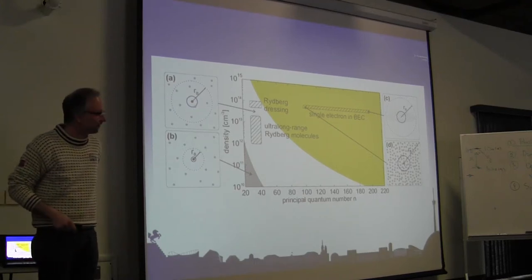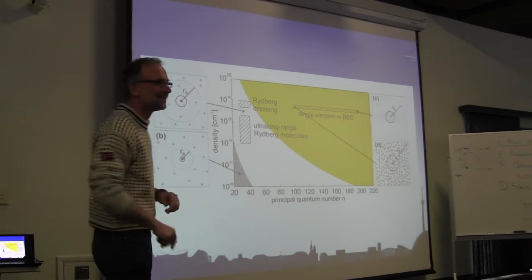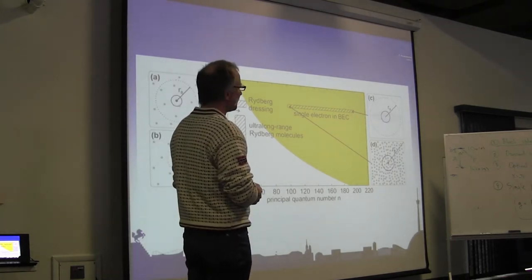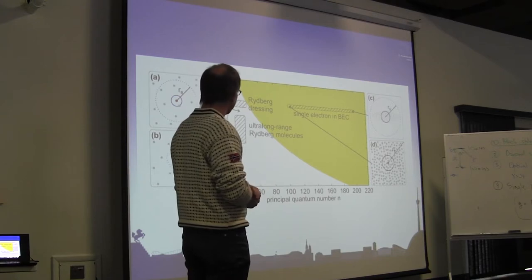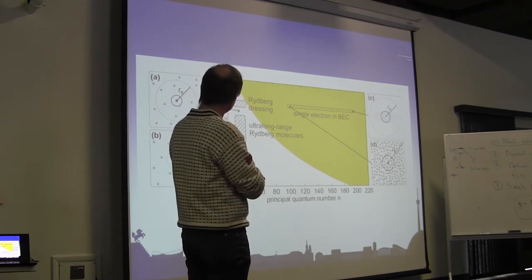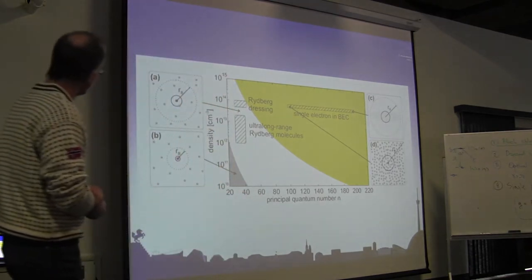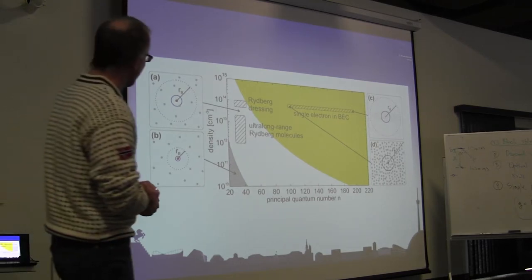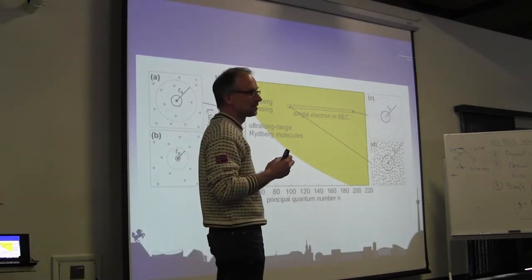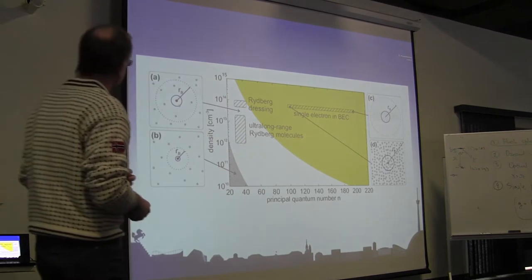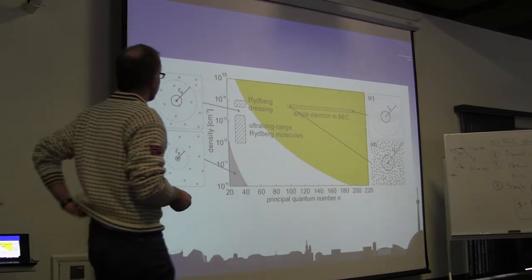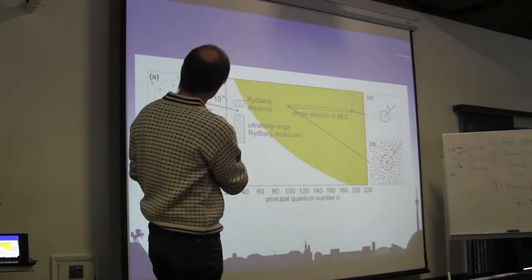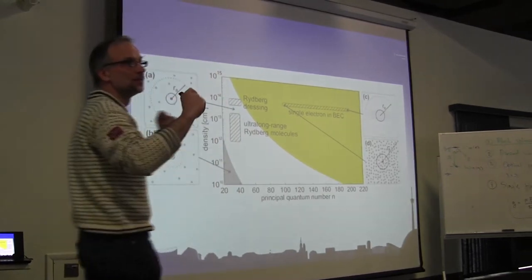Welcome back. I want to continue with what we discussed last night, which is summarized in this plot here, where I plot the density and the principal quantum number of a Rydberg atom, in order to discuss the different landscapes involved when you do Rydberg excitation in dense gases. Density translates into a mean particle spacing, seen as the distance between those gray dots, which are supposed to be ground state atoms.